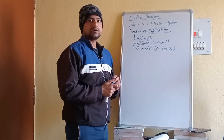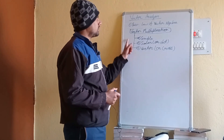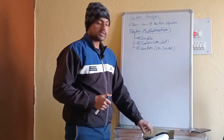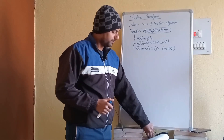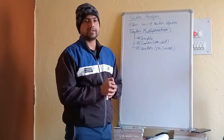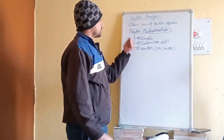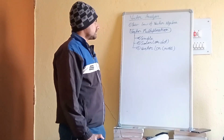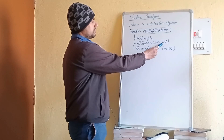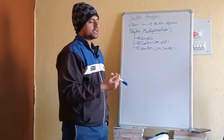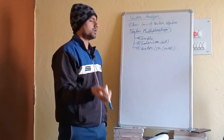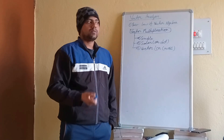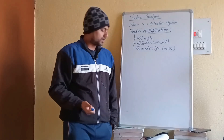In this video I will explain vector multiplication and the different kinds of vector multiplications. There are three kinds: the first is simple multiplication, the second is scalar dot product, and the third is vector cross multiplication, also known as cross product. I will explain all three kinds one by one.